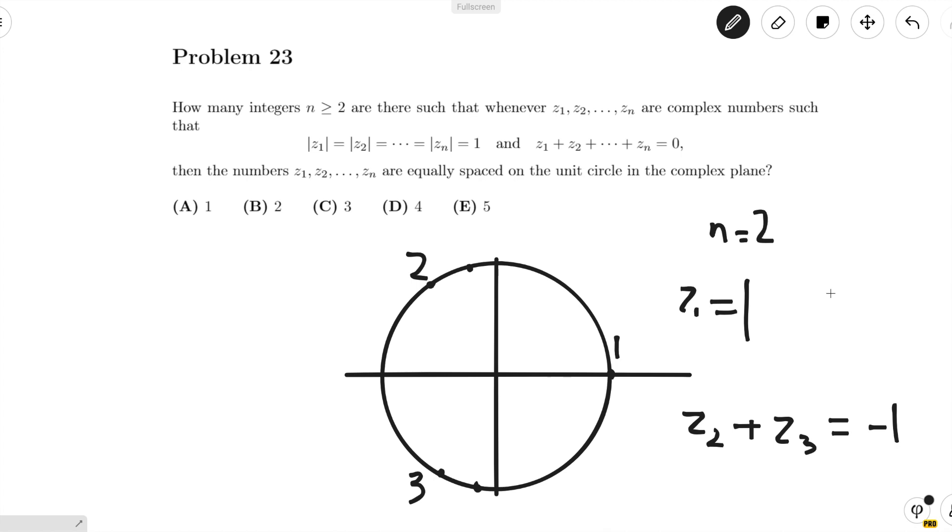And we see that these points are also equally spaced on the unit circle. So n equals 3 also works.